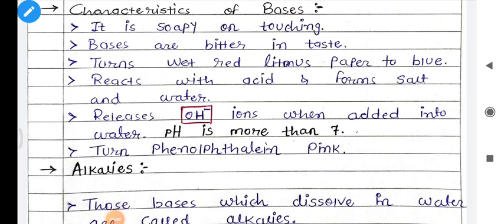It reacts with acid and forms salt and water. When the base reacts with acid, it forms salt and water. It releases OH- ions when added into water. When acid is added into water it releases H+ ions, while the base releases OH- ions. The pH of base is generally more than 7. It turns phenolphthalein pink — phenolphthalein is converted to a pink color. So these are the characteristics of bases.